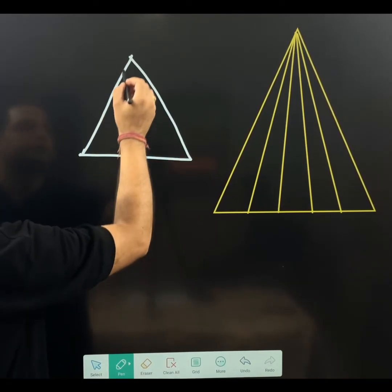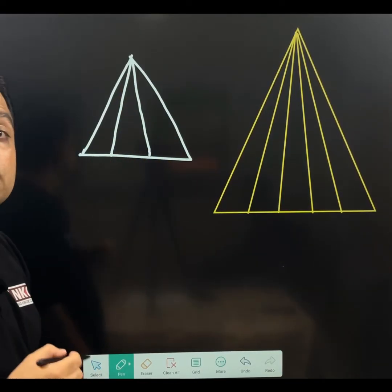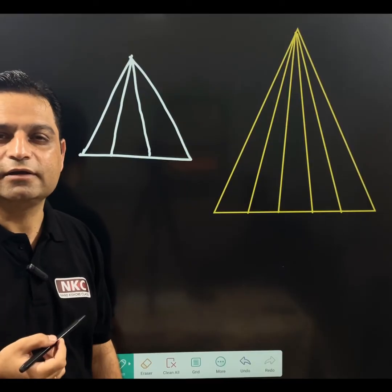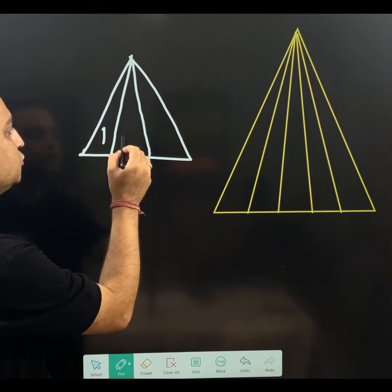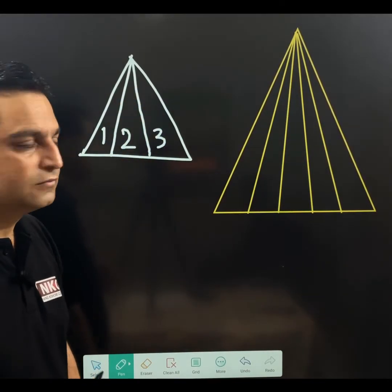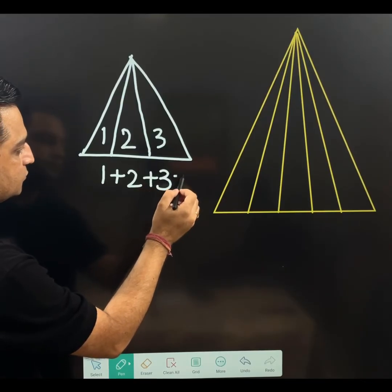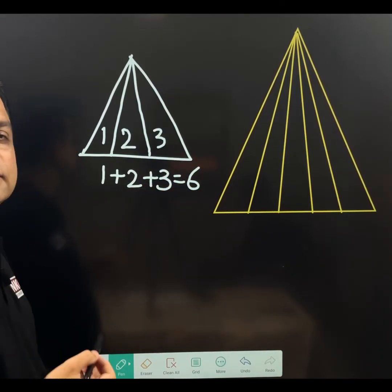Another example I am taking. Let us suppose you have two lines like this. Now if we need to count the number of triangles, what we need to do, I am doing it with shortcut. But still you can do the counting also. First of all, 1 plus 2 plus 3. Total is 6 triangles.